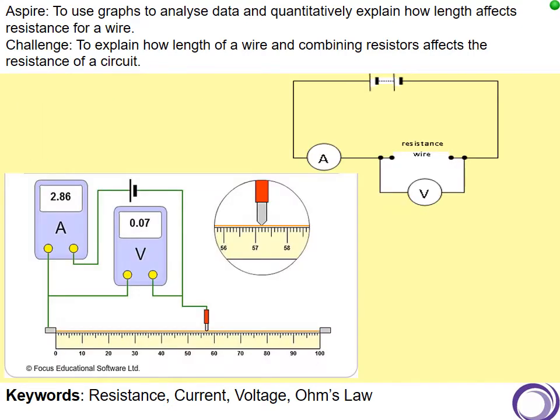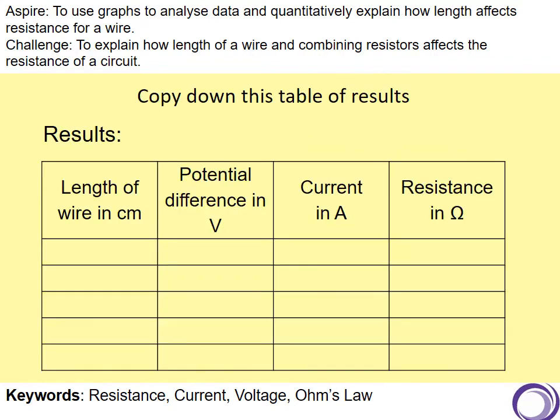And here's a diagram of the experiment in the top right. You've got an ammeter that's in series with the resistance wire and you've got a voltmeter that's in parallel to the resistance wire and you've also got the power pack. If you can copy this table down, we see we've got the four columns: we've got length and a wire, we've got potential difference, current and resistance.